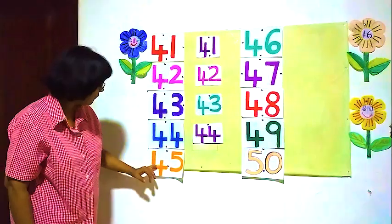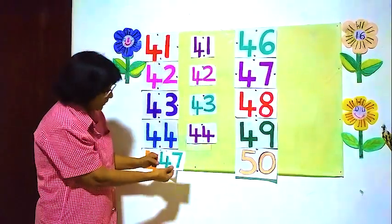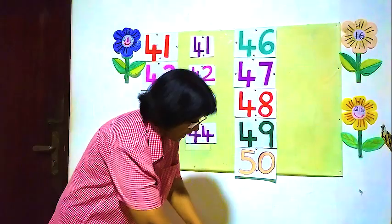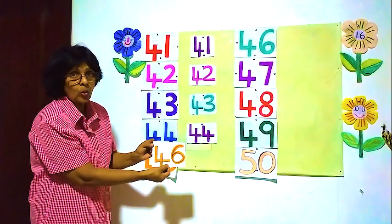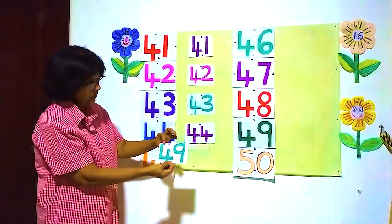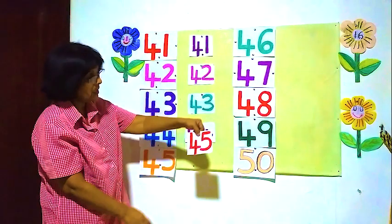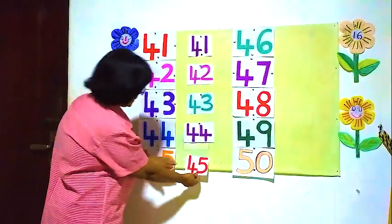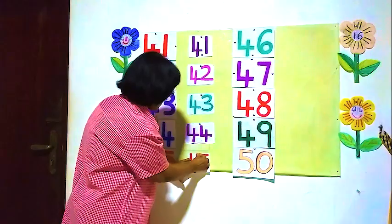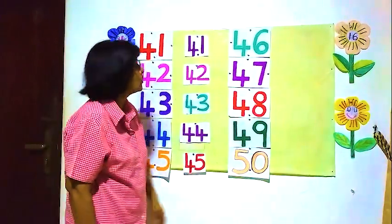What is the next number? 45 — 4 and 5. Is this 45? No, this is 47. Is this 45? No, this is 47. Is this 45? No, this is 46. Is this 45? This is 49 — here 4 and 9. Where is 45 then? Here, 45. Right, now we will go to the other side.